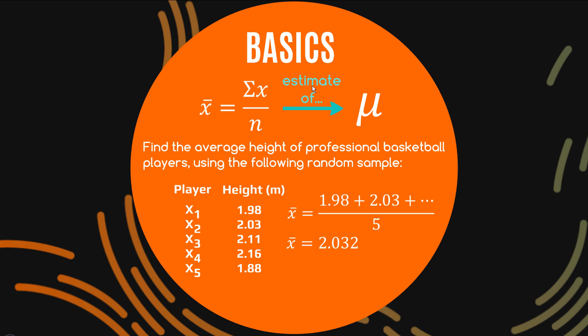Now the point I was making above here when I say it's an estimate of mu is to say that this is our best guess now as to the true average height of professional basketball players they seem to be on average 2.03 meters tall which is bloody tall.